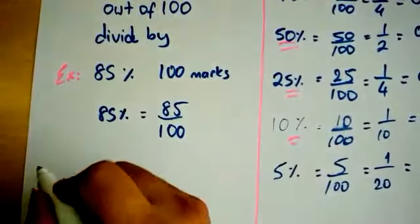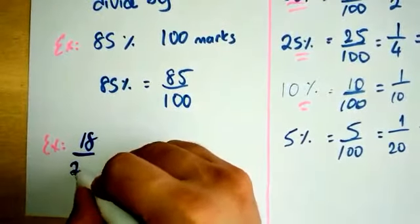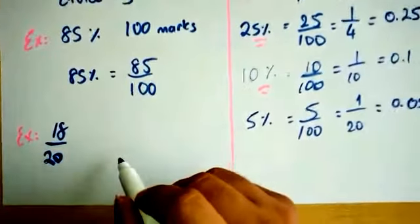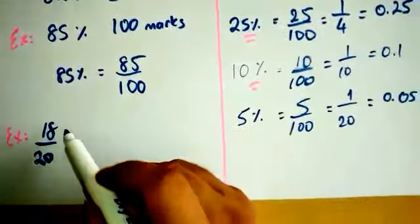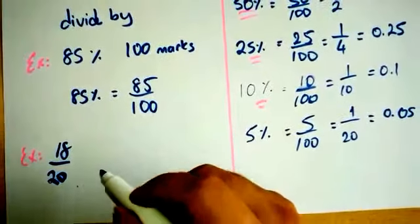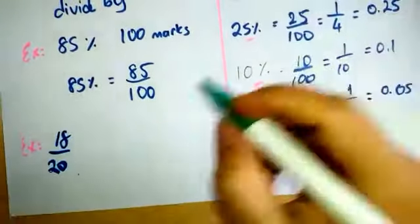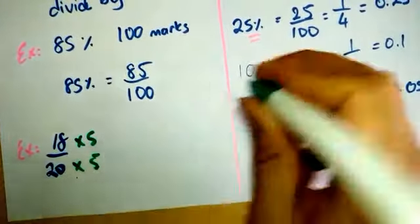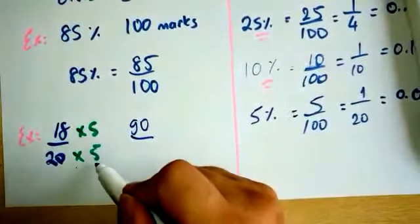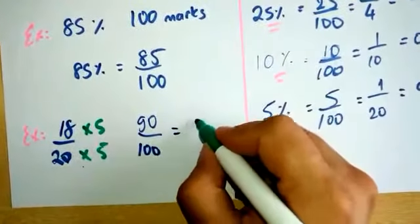Another example: if you do 18 out of 20, first you need to write the information as a fraction. You gained 18 out of 20 marks. Since the percentage requires a denominator of 100, we can turn 18 out of 20 into fraction form by multiplying both numerators and denominators by 5. So we can write 18 times 5 is 90, and 20 times 5 is 100. As you see, the denominator is 100 now, which is 90%.